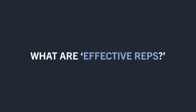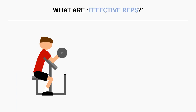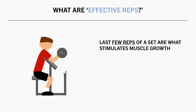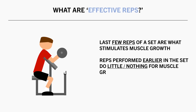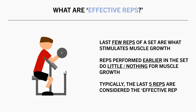First, we need to establish what exactly are effective reps. There are multiple ways in which the effective reps model has been defined, but they all follow the same general principle. Essentially, this model suggests that when we perform a set somewhere within the hypertrophy rep range, it is the last few reps of that set which are the ones stimulating muscle growth, while the reps performed earlier in the set aren't doing anything or very little to stimulate muscle growth. Typically, it is the last 5 reps of the set before we reach failure which are considered to be the effective reps.